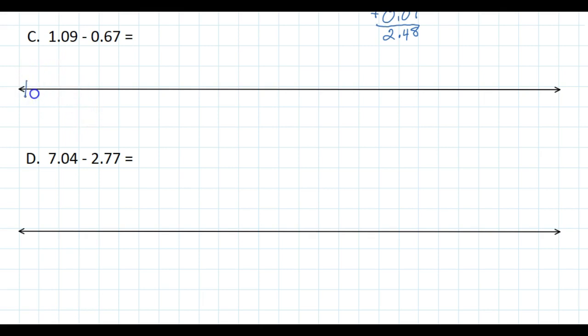We start with our smallest number here, which is 0.67, and we're going to our largest one here, which is 1.09. I'm going to just take this to the next biggest whole number. So that's going to be 33, so I add 0.33 and that takes me to 1.00.